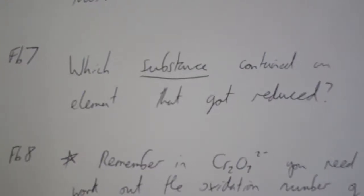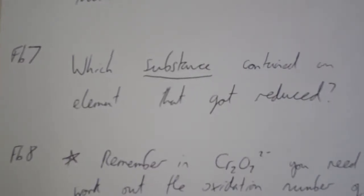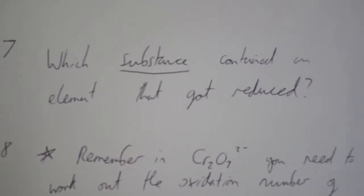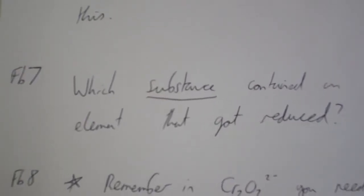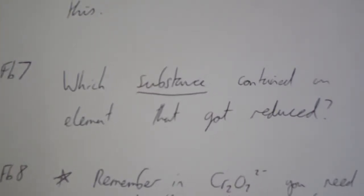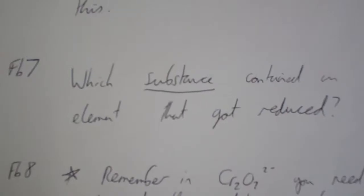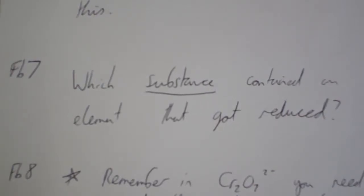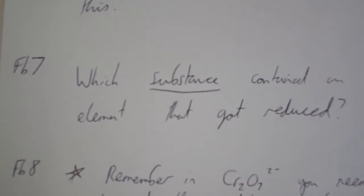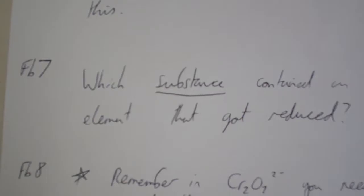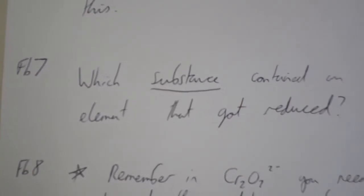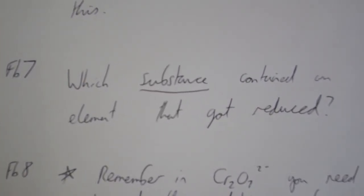In terms of oxidizing agent, you're looking for the substance which contains the element that got reduced. It may be only one part of that substance. So if, let's say, it was HCl, it might just be the H that got reduced — but the oxidizing agent is the overall substance, HCl, not just H.